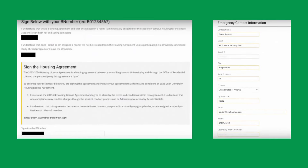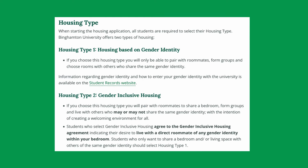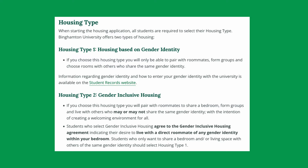Read and agree to the housing agreement. Provide emergency contact information. Choose your housing type: either housing type 1, which is housing based on gender identity, or type 2, which is gender inclusive housing.